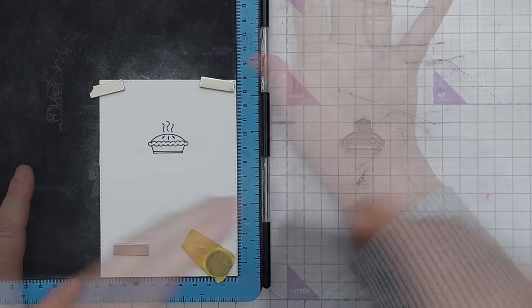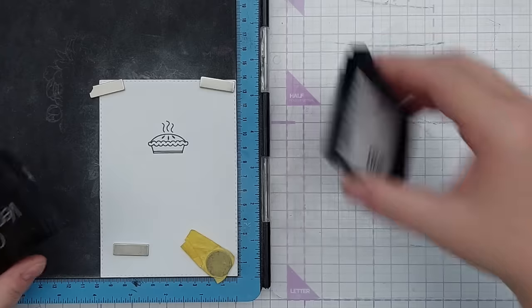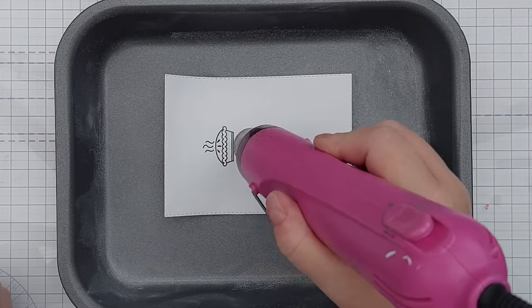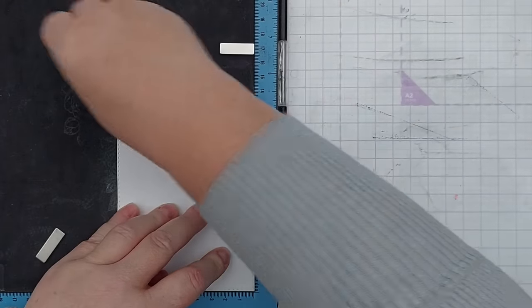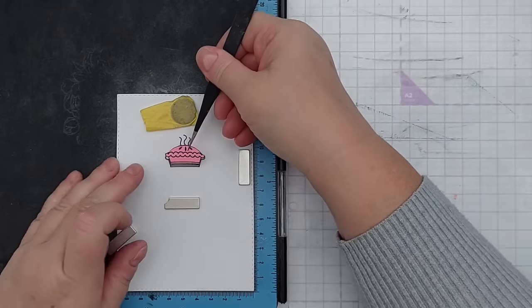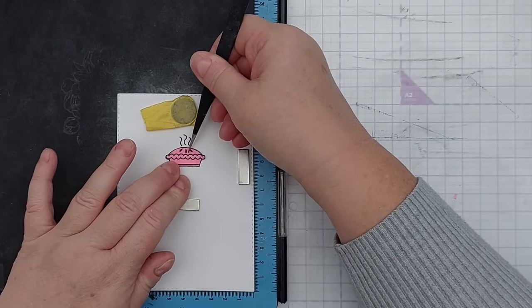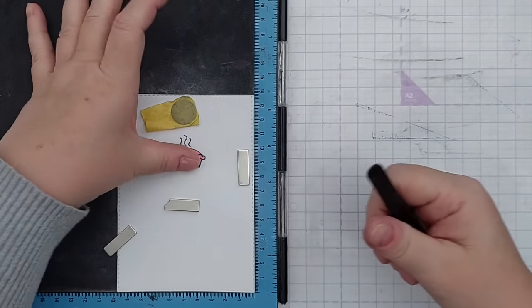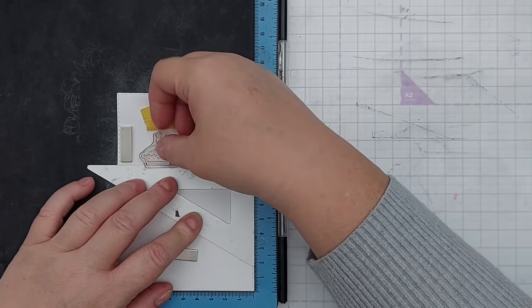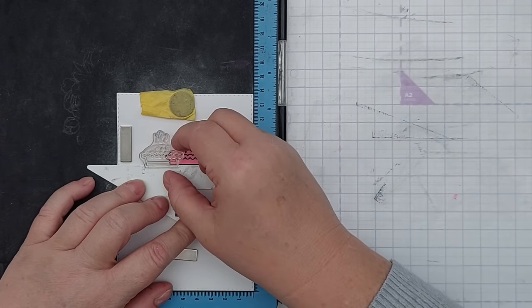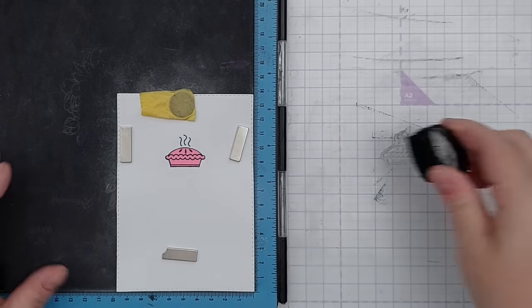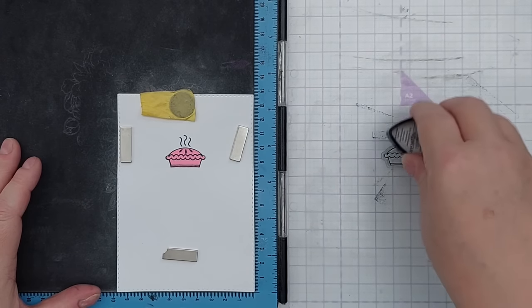I'll wipe that off and then stamp it in Versamark. I shall dip that in my clear embossing powder and heat it with my heat tool. I'll place my mask over my first pie, press it down well because it's on embossing powder. I've made sure my pie stamp is nice and clean so that I don't accidentally get mucky marks everywhere. I'm going to put it a little higher up and to the left. This time I'm just going to stamp in Memento Tuxedo Black. I am not going to heat emboss this.